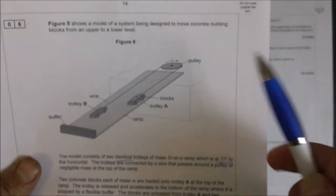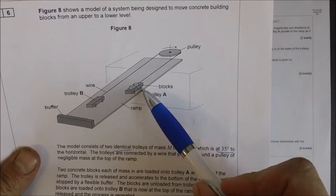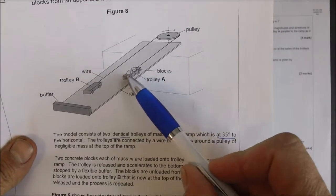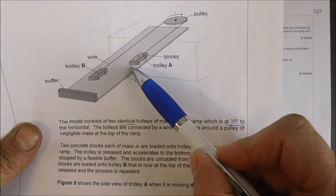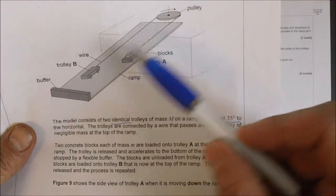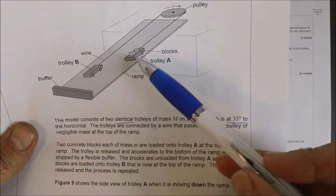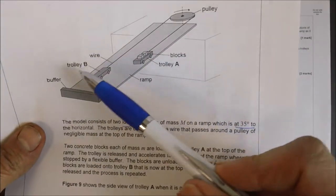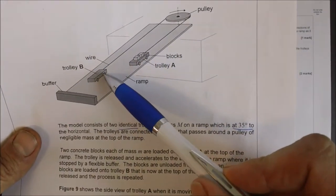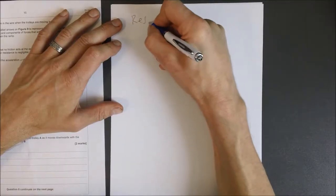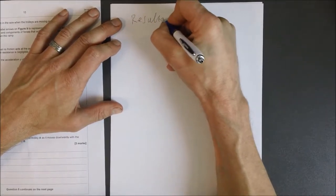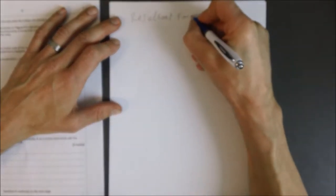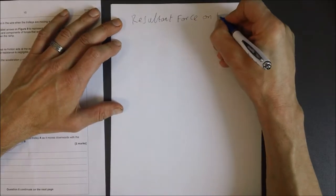Now, we need to then go back and have a look at this part of the system and say, well, actually what I've got here is I've got a force here which is larger and a force here which is smaller. Therefore, this trolley will be going downwards and this trolley will be going upwards. So we're going to have a resultant force and we're going to have one minus the other. What we're trying to work out here is the resultant force on B.